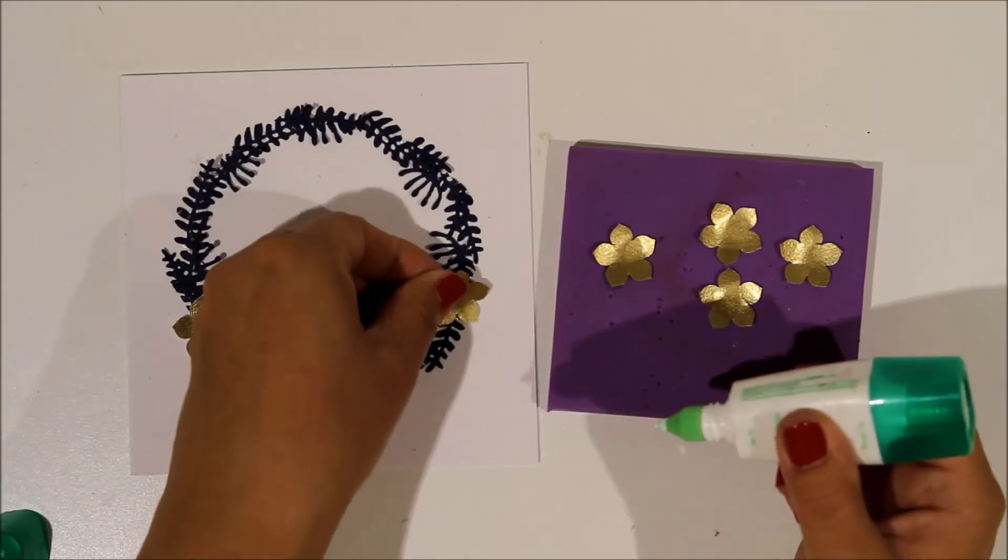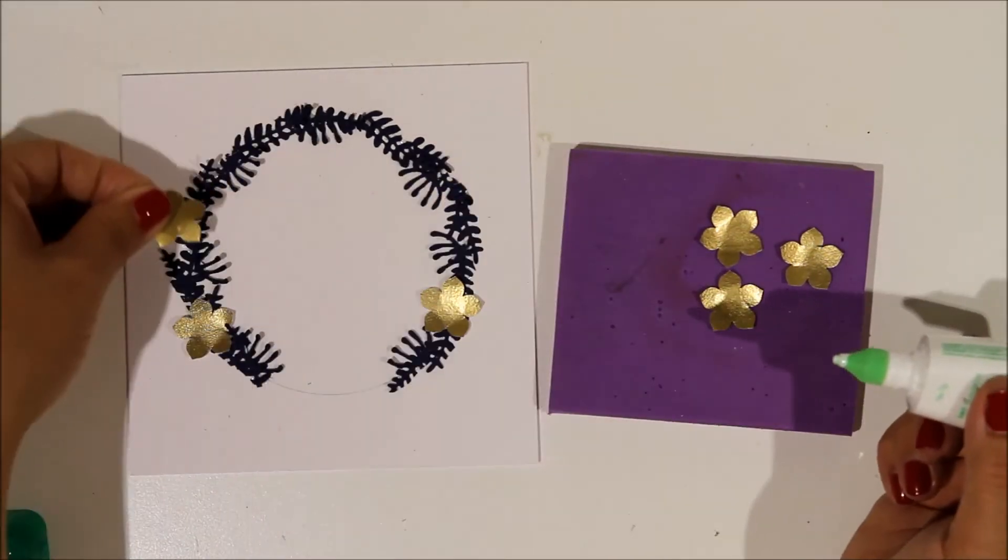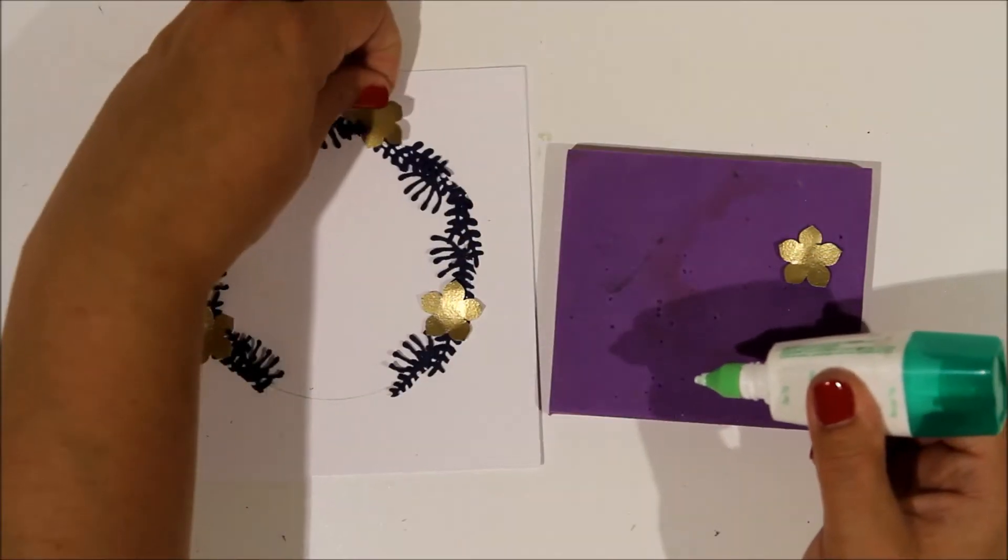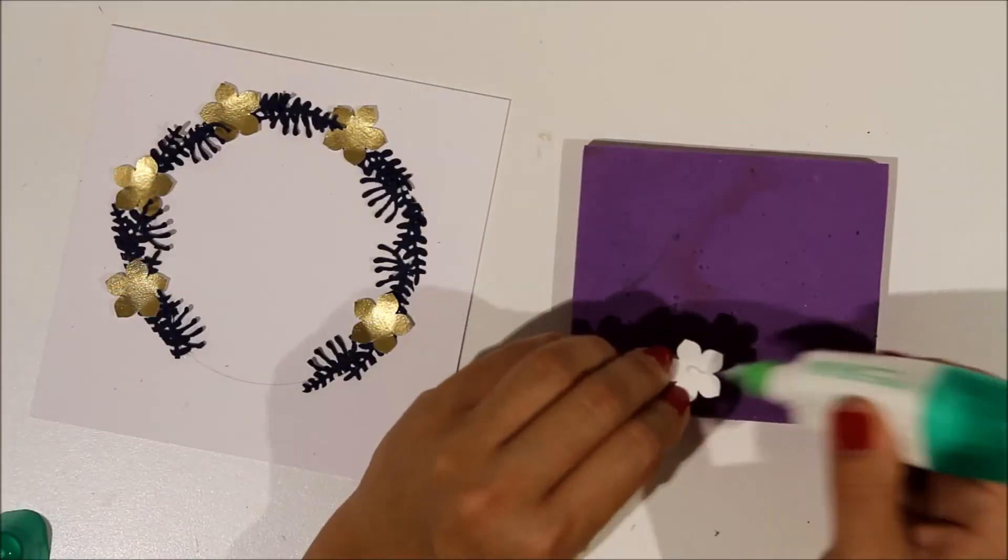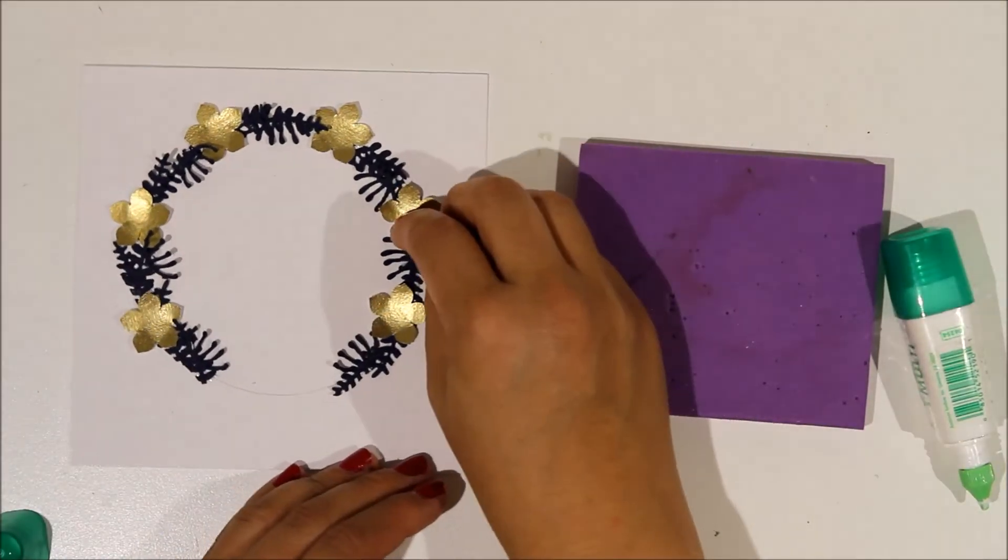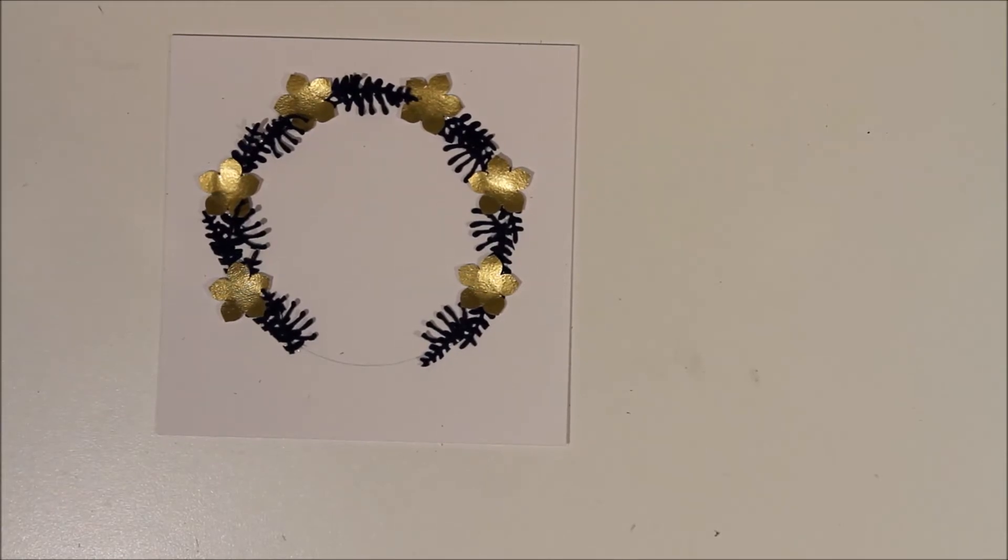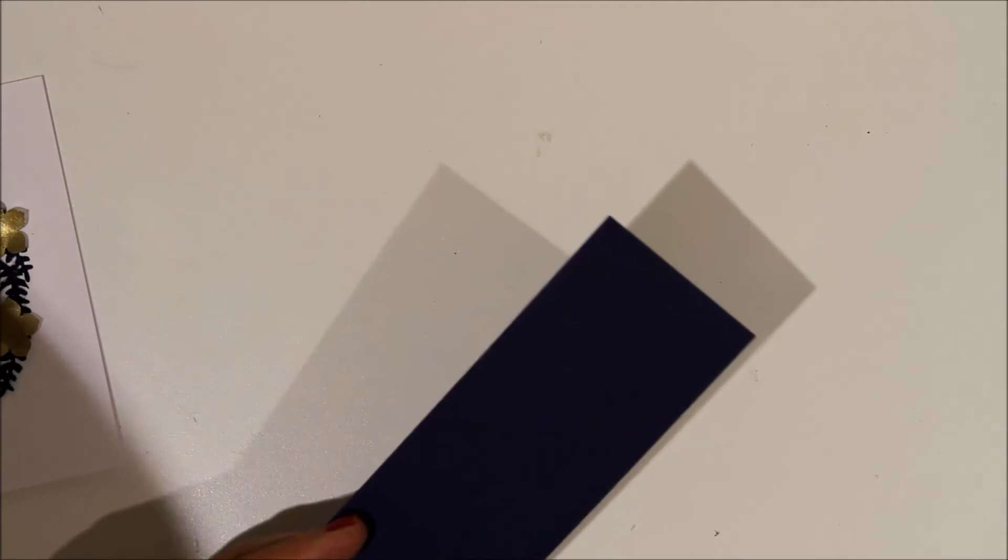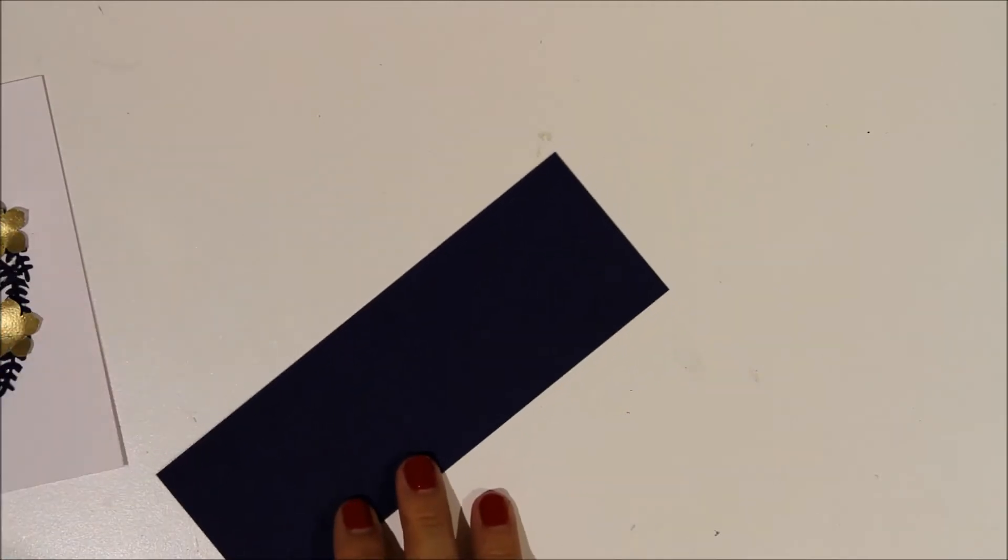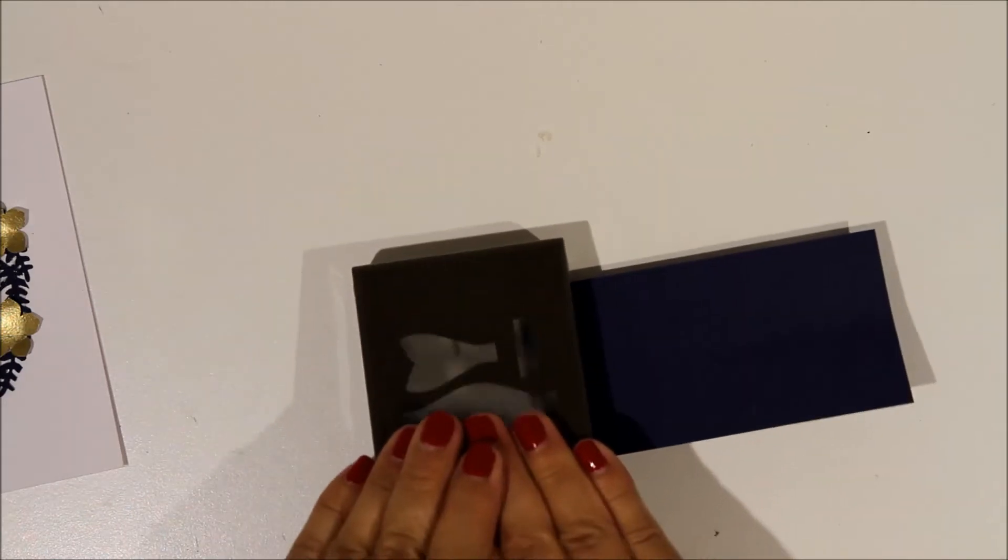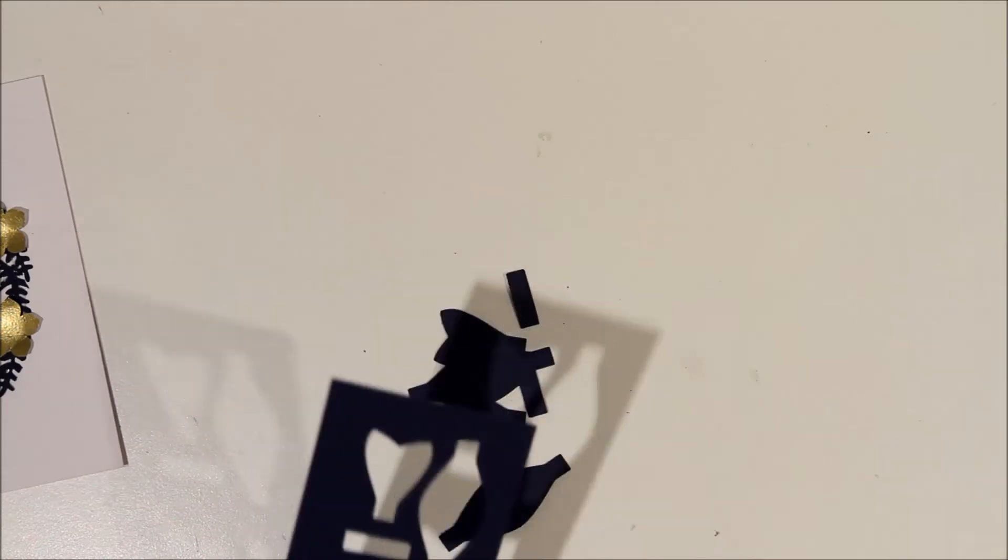Then again just popping them onto my foam mat and using my ball tool to give them some shape. And then I'm just going to stick those around the outside of the wreath. Give them a good push down and then leave those all to dry for a while while I go on to the next part.